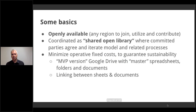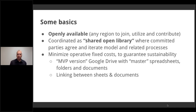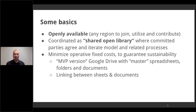Helping bring those standards as well — standards in KPIs, data, applications, and practices will help improve measurability, comparability, and provide a better view into returns on investments in different areas of support functions. To apply this: making it openly available is essential — if it's only per request or only internally inside an organization, it's not an effective shared open library. Committed parties need to agree to iterate the model and related processes, and minimize fixed operating costs to guarantee sustainability.